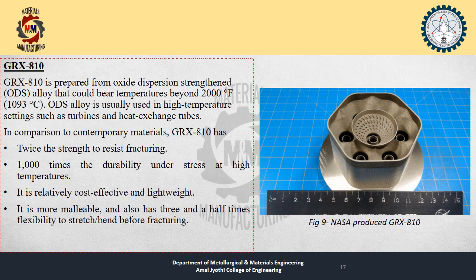GRX810 is an oxide dispersion strengthened alloy that can bear temperatures beyond 2000°F (1093°C). Compared to contemporary materials, GRX810 has twice the strength to resist fracturing and one thousand times the durability under stress at high temperature. It is relatively cost-effective and lightweight, and also has three and a half times greater flexibility to stretch before fracturing.